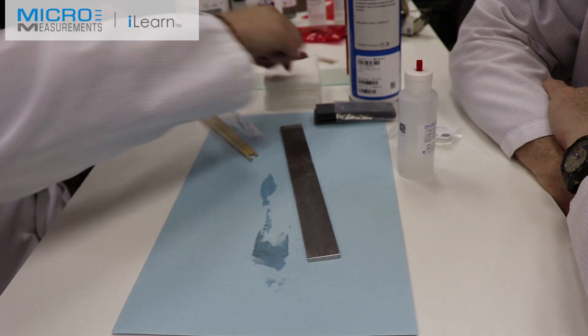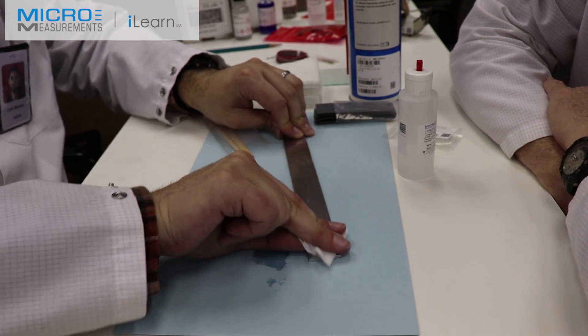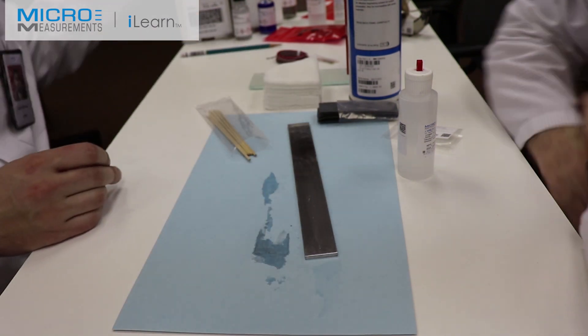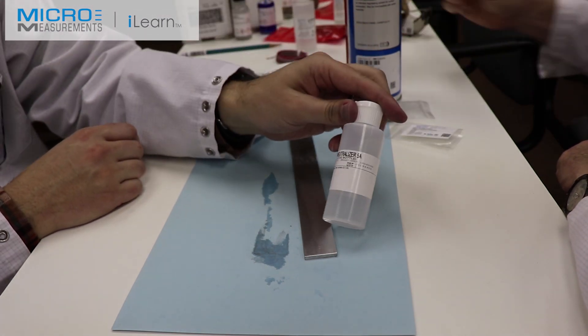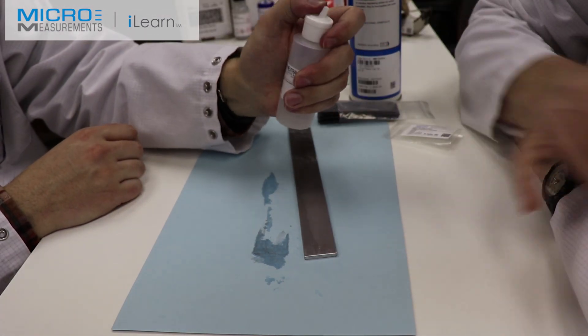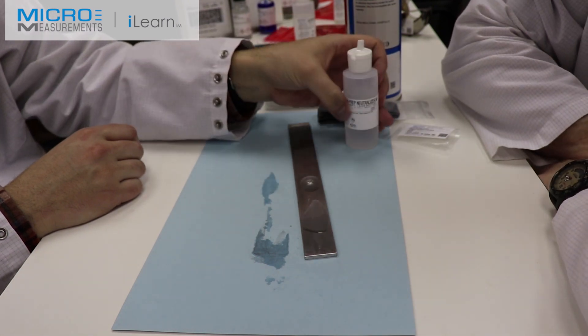Having completed that scrub with Conditioner A, again with a single wiping motion, he's going to absorb the excess material. And the final step of surface preparation will be to use the Neutralizer 5A. Now, we would have burnished an alignment mark here, but this is a demonstration, so we're just going to put the gauge down.